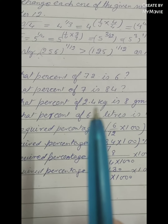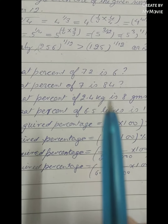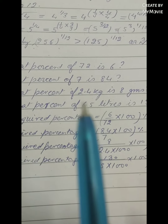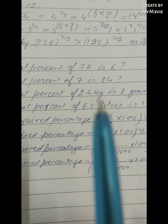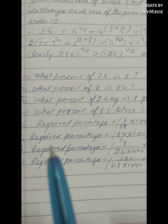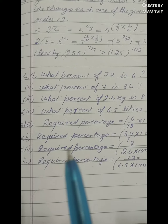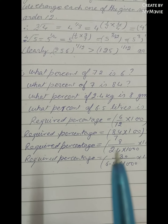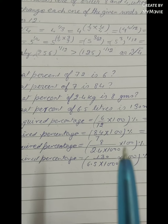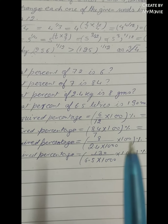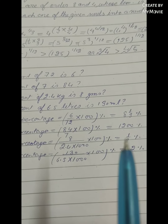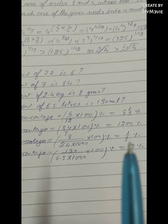Next: what percent of 2.4 kg is 8 grams? The two terms are in kg and grams, so we convert kg into grams by multiplying by 1000. The required percentage is equal to 8 upon 2.4 into 1000, into 100 percent, which is equal to 1/3 percent.